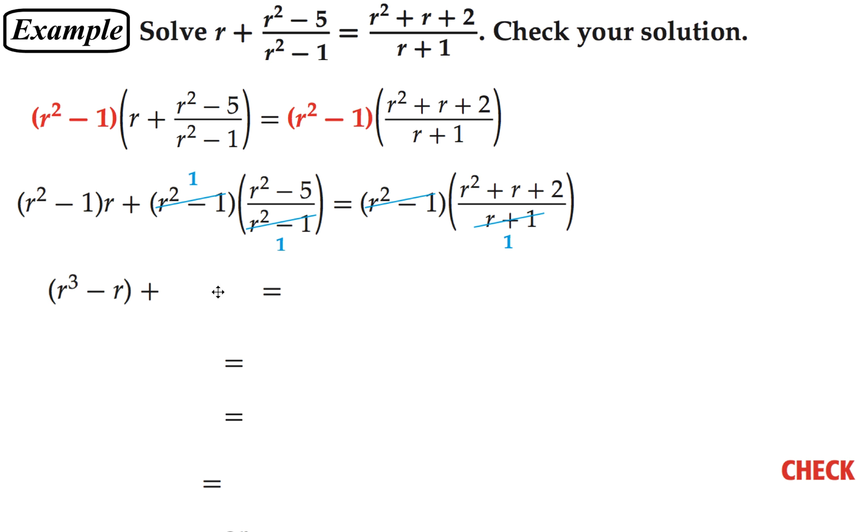The r squareds minus 1 cancel here, so we just have r squared minus 5. And remember this one, we had an r plus 1 contained in here, so r minus 1 is left times the numerator. And then combining like terms, and over here we multiplied through our parentheses. We used our distributive property to get this. So if you need to pause the video and work through that, go ahead and do that.